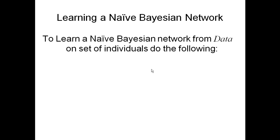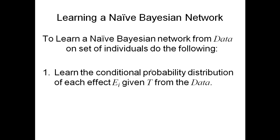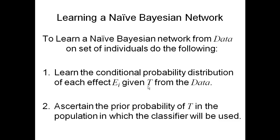To learn a naive Bayesian network from data, we assume we have a large amount of data on some individuals in a population. We've already identified the structure, so all we need to do is learn the conditional probability distribution of each effect E_i given T, which can be done simply by counting, and ascertain the prior probability of T in the population where the classifier will be used. Once you ascertain the prior probability of the target and these conditional distributions, you have fully specified the naive Bayesian network.